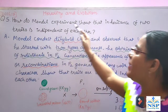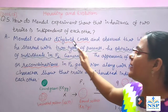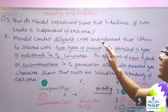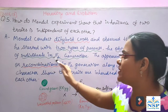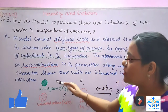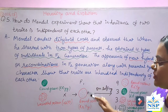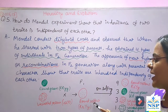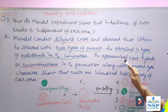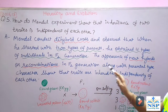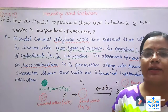Our next question: How do Mendel's experiments show that inheritance of two traits is independent of each other? Mendel conducted a dihybrid cross between two contrasting characters. He crossed the round green seeded plant with wrinkled yellow seeded plants. In F1 generation, all plants had round and yellow seeds. On selfing, four types of seed plants were observed. The appearance of new combinations in F2 generation, along with parental types, shows that traits are inherited independently of each other.